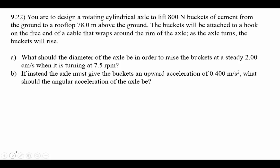Problem 9.22: design a rotating cylindrical axle to lift 800 newton buckets of cement 78 meters to a rooftop. The bucket attaches to a cable that wraps around the rim of the axle. What should the diameter be to raise buckets at a steady 2 centimeters per second at 75 rpm? Using v tangential equals r omega: 0.02 meters per second equals r times omega, with 75 rotations per minute needing conversion to radians per second.